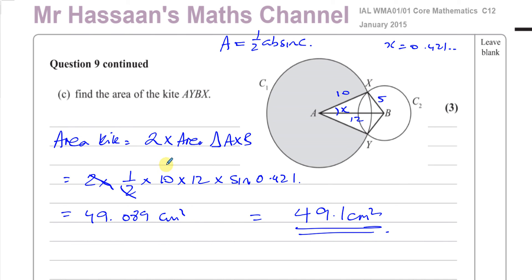We're going to round to 3SF, so 49.1 cm². It doesn't tell us what to round to, so we round to 3SF for most values. That's the answer to part C and the end of this question, which is question 9 from this C12 paper and question 10 from my paper. Thank you for watching and see you soon.